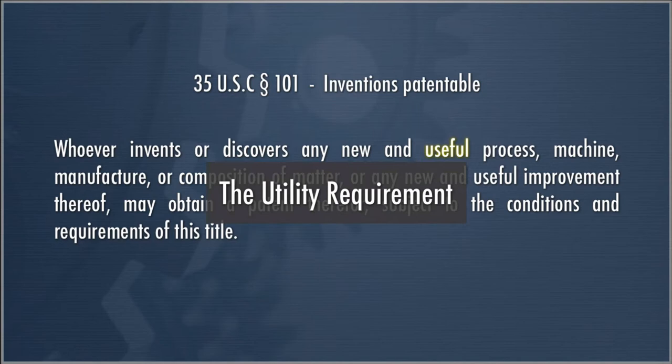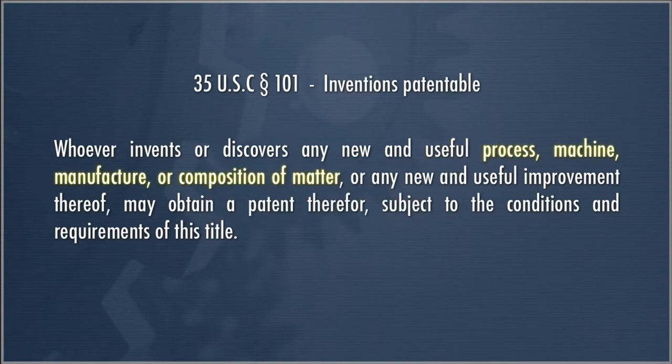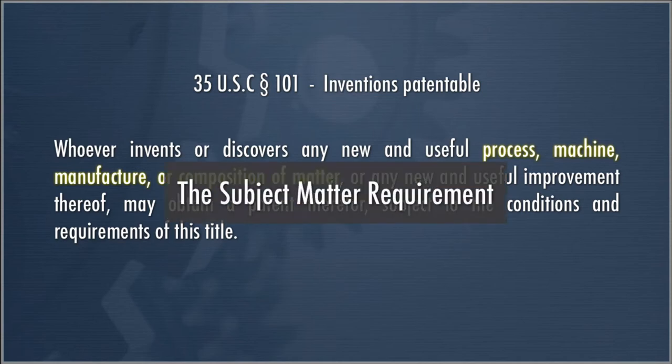We will talk about the utility requirement in Class 26. The basic concept is that we don't want to give patents for things that don't have any use to society. For the next couple of classes, what we're more interested in is the subject matter requirement — in order to get a patent, the invention has to fall within a process, machine, manufacture, or composition of matter.